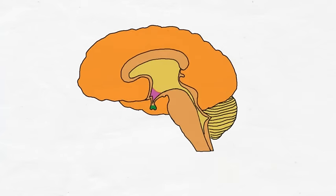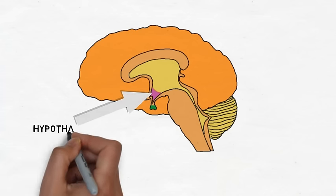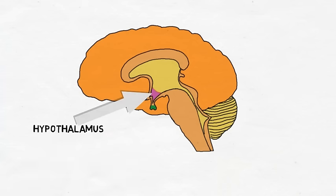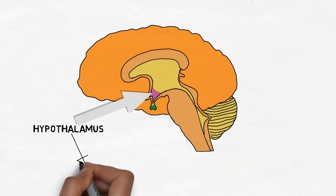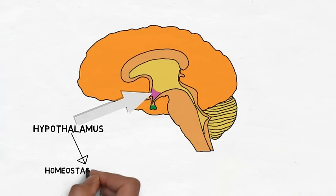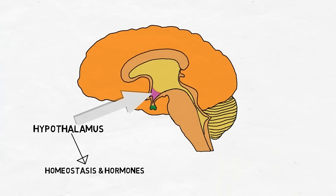The hypothalamus is a small region situated directly above the brainstem. It is made up of a collection of nuclei with a variety of functions, but in general, the hypothalamus is involved in controlling the two H's: homeostasis and hormones. Homeostasis is a term used to describe the maintenance of balance or stability in a biological system. The hypothalamus can maintain homeostasis either by exerting direct influence over the autonomic nervous system or by causing the release of hormones.